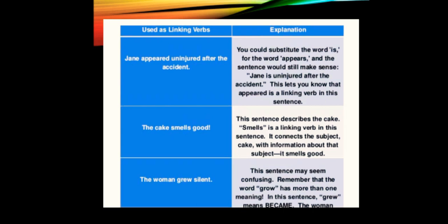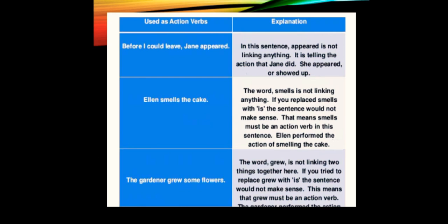Next slide: Before I could leave, Jane appeared. Now in this sentence, if we replace with 'is' - before I could leave, Jane is - sense is not complete, so it is an action verb. Alan smells the cake - Alan is the cake? Sense is not complete. Alan cannot be the cake; Alan is a person. The gardener grew some flowers - the gardener is some flowers? Not possible. So it means here the replacement of 'is' is not working, sense is not complete, so it's an action verb. This is how we find out what is an action verb and what is a linking verb, keeping that particular list in mind.